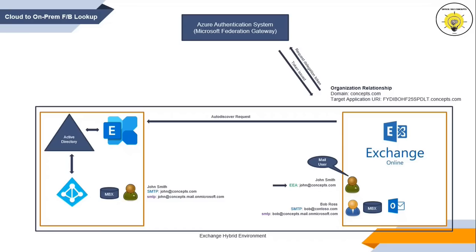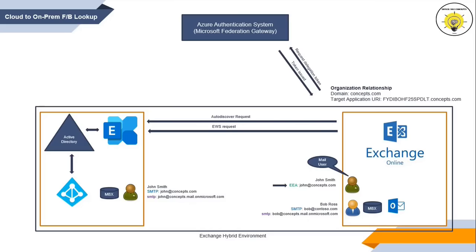Once the token is received, Exchange Online will make an auto-discover request to the on-premise organization, sent to the URL mentioned in the target address URI of the organization relationship in Exchange Online. If this URL is incorrect, the auto-discover request will fail. Once the auto-discover request passes, Exchange Online will make an EWS request to on-premise along with the delegation token. On-premise Exchange will validate the token, and once validation is successful, it will return John's free busy information to Exchange Online so Bob can see whether John is free or busy.